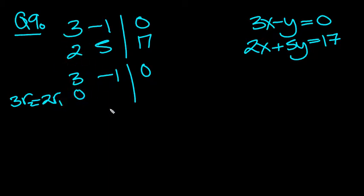3 of these, take 2 of those, it's 0. That's why we're doing it. And then 3 of these is 15, take 2 of these, it's plus 2, so we get 17.